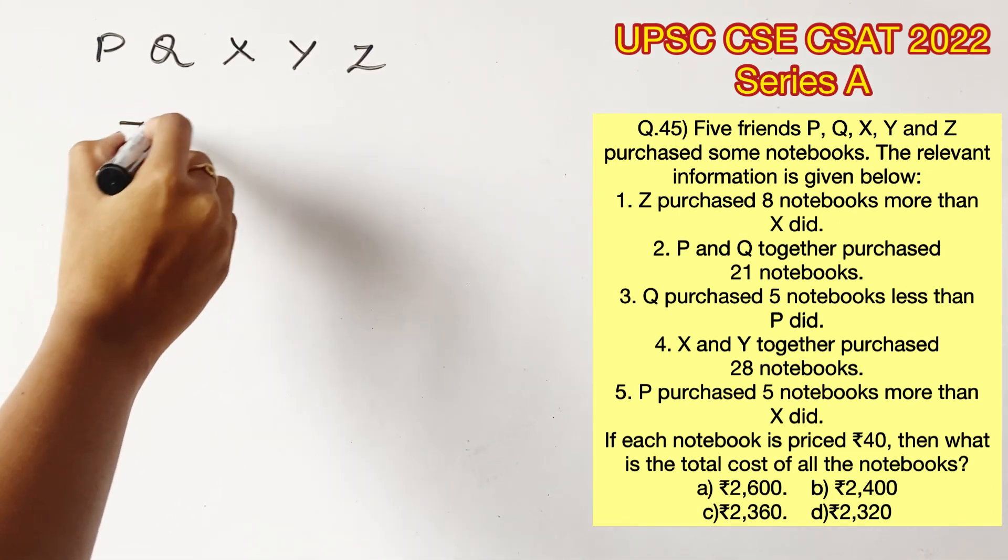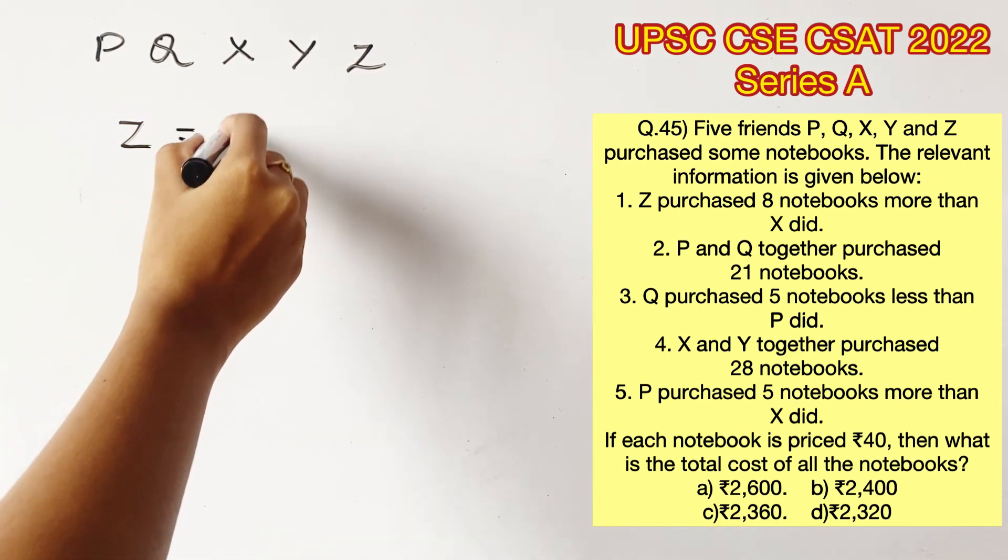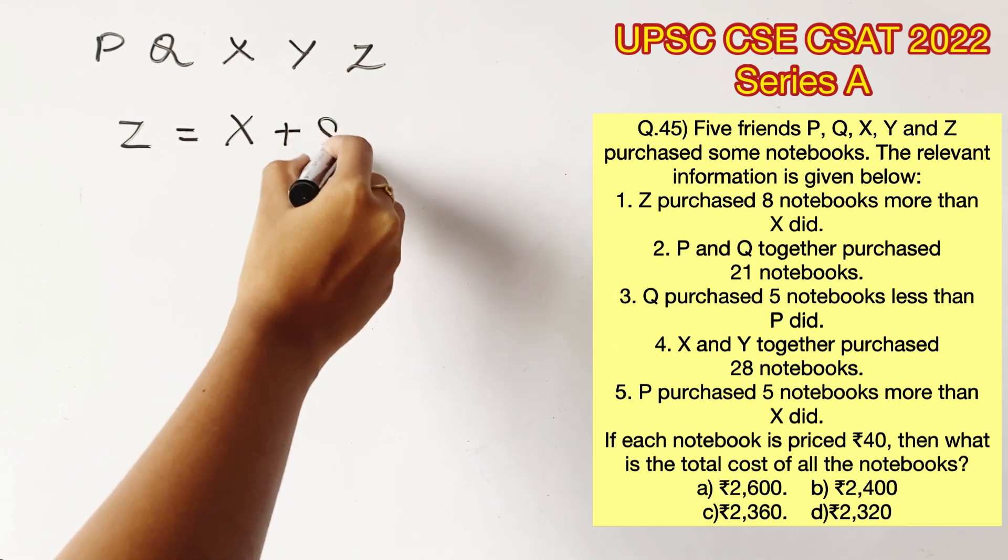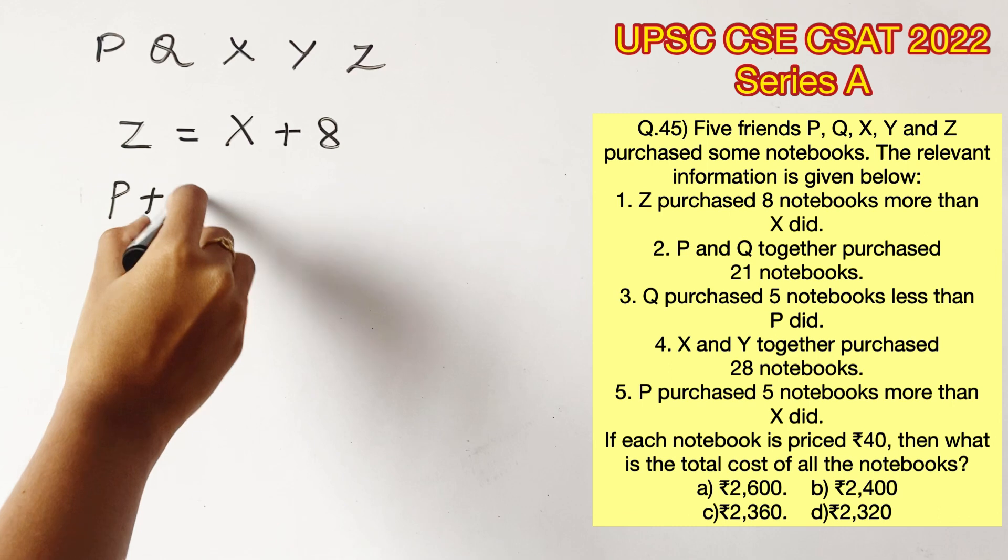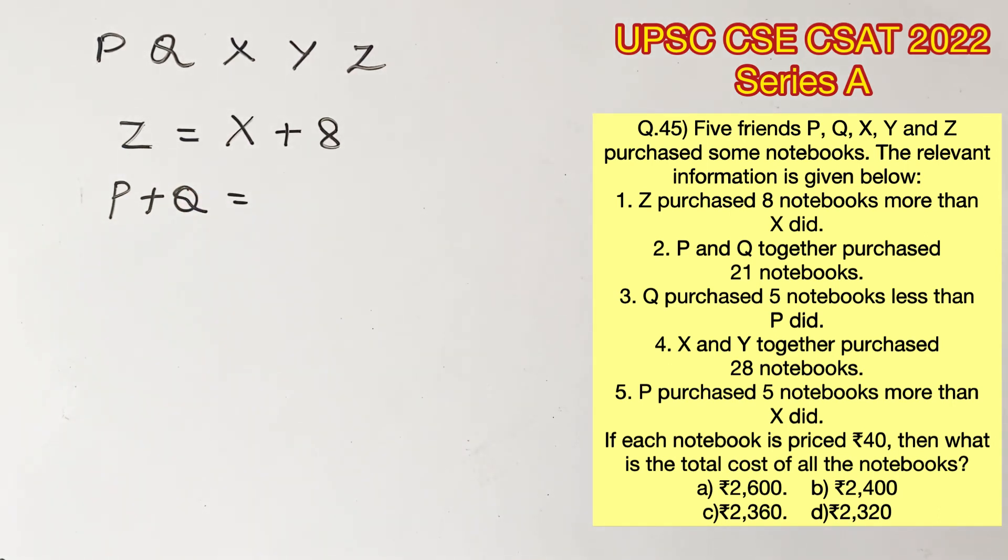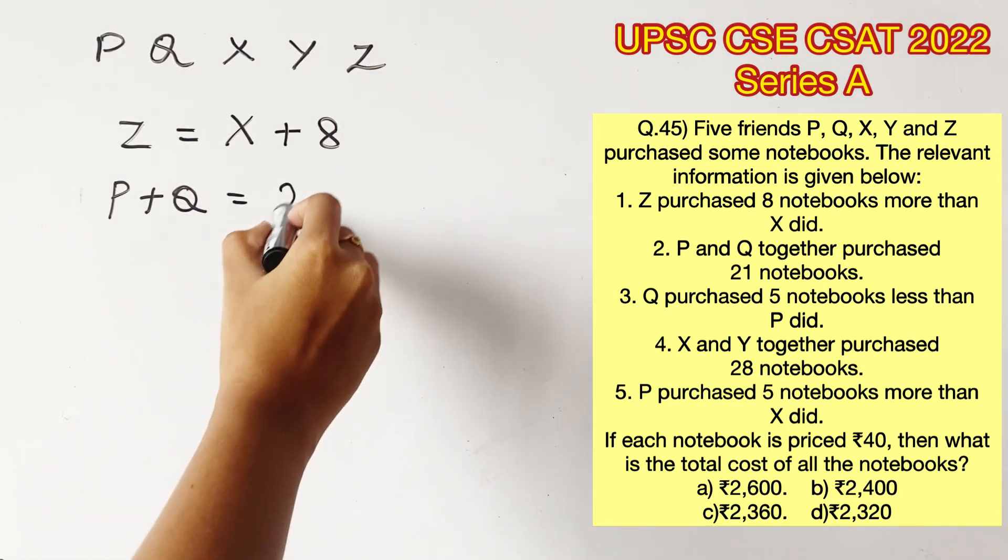The first statement says Z purchased 8 notebooks more than X. So Z is equal to X plus 8. The second statement says P and Q together have purchased 21, which means P plus Q is equal to 21.